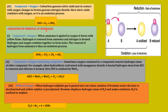Next is oxidation by removal of hydrogen. There are also three types. First: compound plus oxygen. When ammonia (NH₃) is ignited in oxygen, it burns with a yellow flame. Hydrogen is removed from ammonia and nitrogen is formed; hydrogen and oxygen combine to form water. The removal of hydrogen from ammonia is thus an oxidation process. When NH₃ reacts with O₂, nitrogen gas (N₂) and H₂O are formed, and oxidation occurs from NH₃ to N₂.